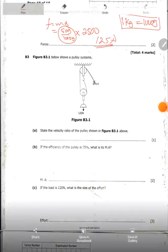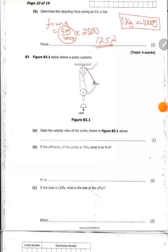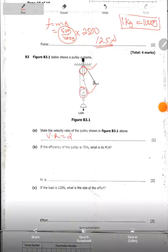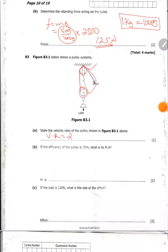The figure B3.1 shows a pulley system. State the velocity ratio of the pulley system. The velocity ratio of the pulley system is always the number of pulleys. We have only 2 pulleys here. So the velocity ratio is equal to 2. We can also count the number of loops. We only have 2.